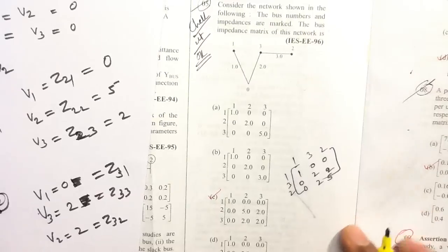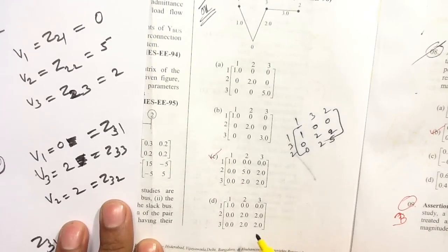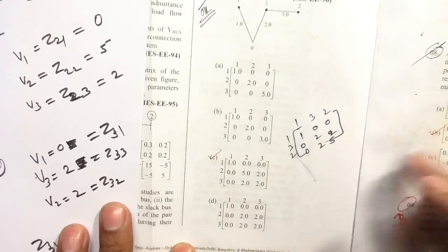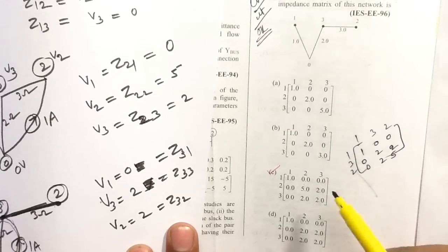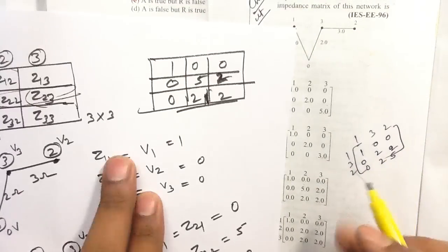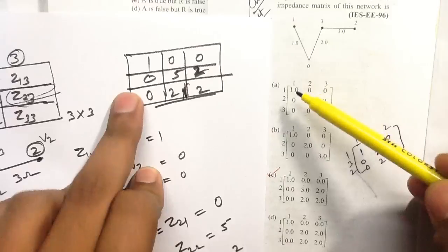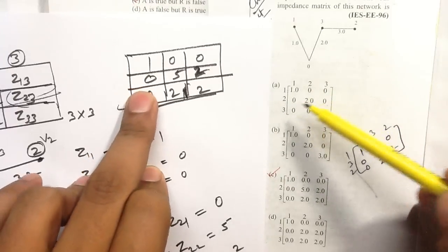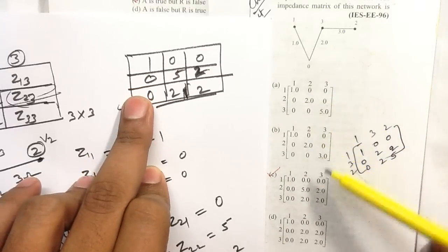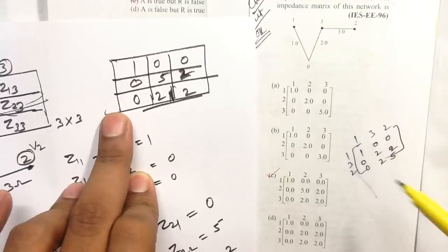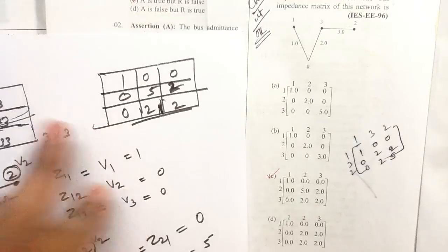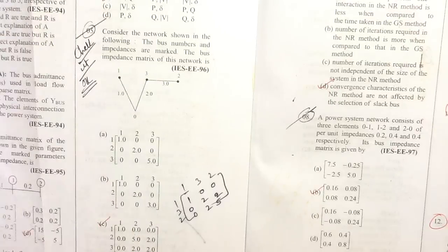Checking the options: matching the values 1, 0, 0 for row 1; 0, 5, 2 for row 2; and 0, 2, 2 for row 3 — option C is correct. You can find it easily. Now let's look at the next question: question number 8.